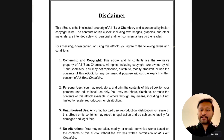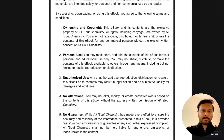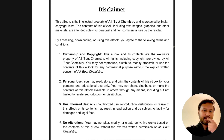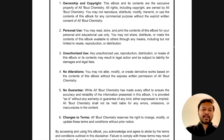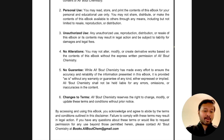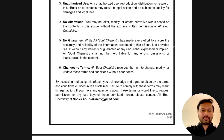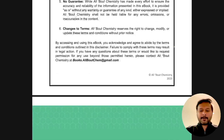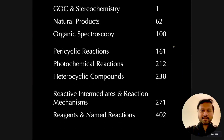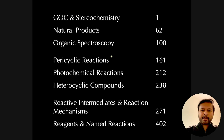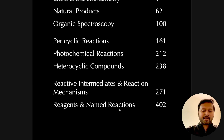There's a disclaimer page for copyright purposes — please make sure you don't share this ebook among students without our permission. Coming back to the content, the chapters are divided into: GOC and stereochemistry, natural products, organic spectroscopy, pericyclic reactions, photochemical reactions, heterocyclic compounds, reactive intermediates and reaction mechanisms, and reagents and name reactions.